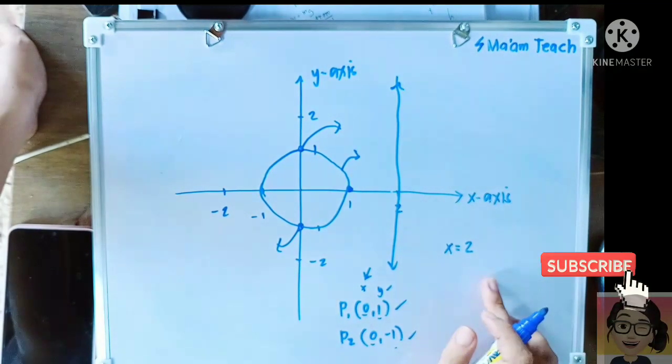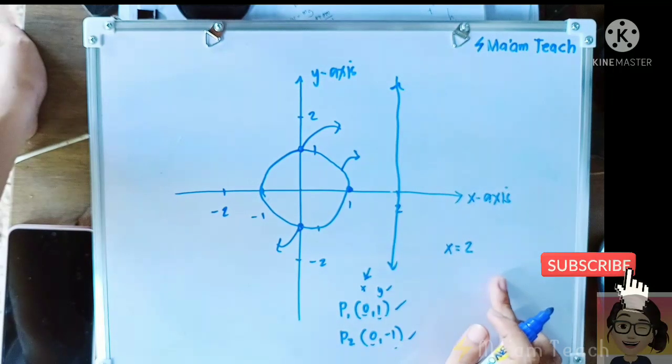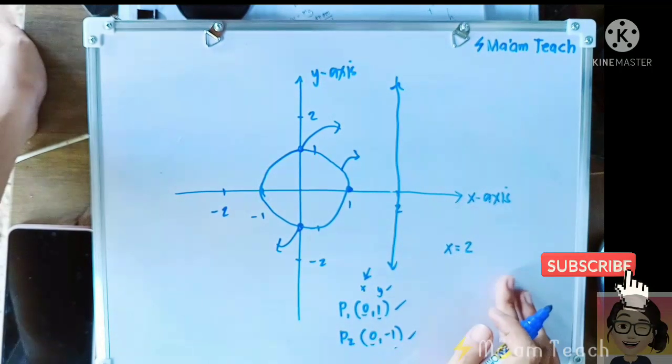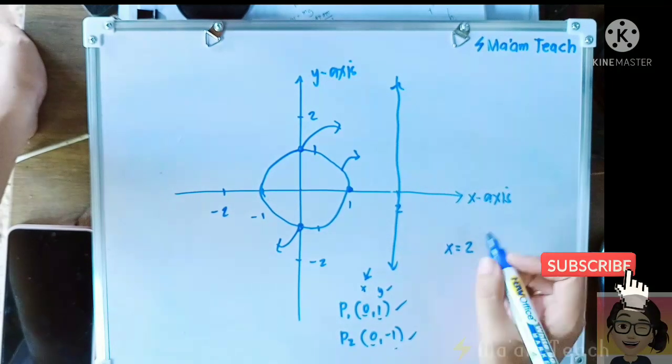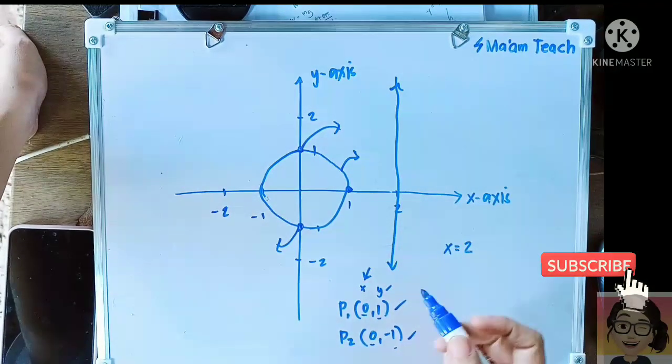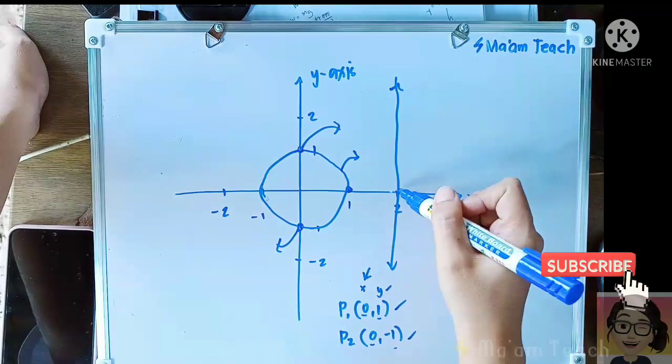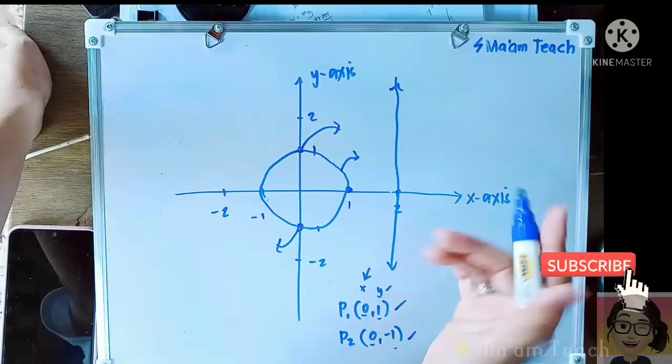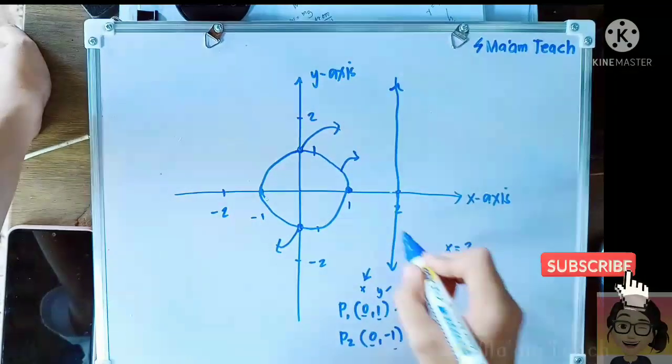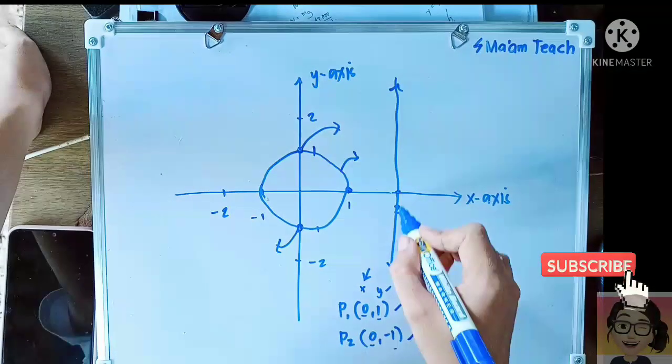This graph can also explain that although it only intersects right here at the x-axis, if you notice one value of x, one value of x...